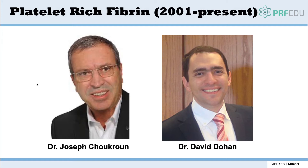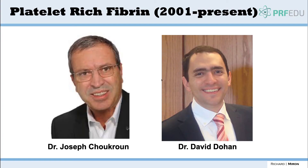Joseph Choukroon deserves a lot of credit for bringing the whole PRF community together and establishing the baseline in the field. Dr. David Dohan also deserves a lot of credit — he was the scientist who did a lot of the basic research studies, figuring out how different cell types work, finding leukocytes in the clot. His original 2006 series of papers deserve a lot of recognition. These two are the pioneers of the PRF-type field.